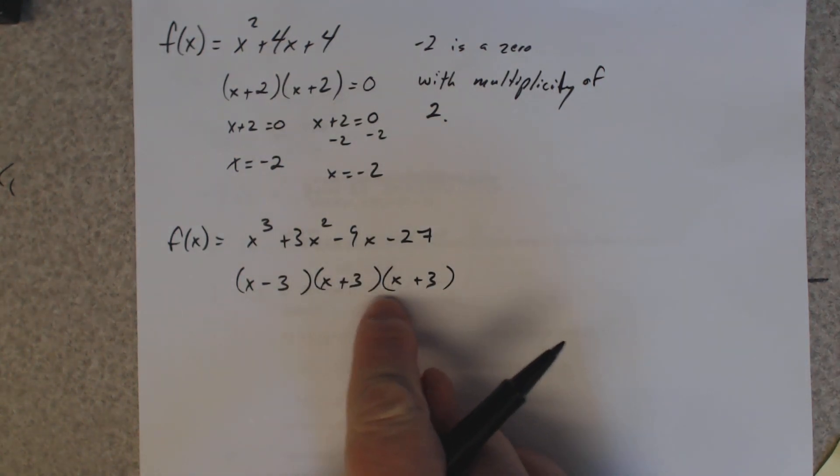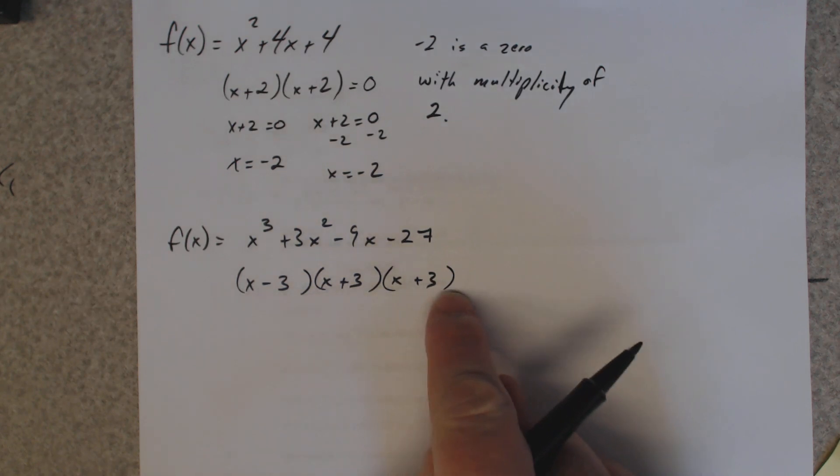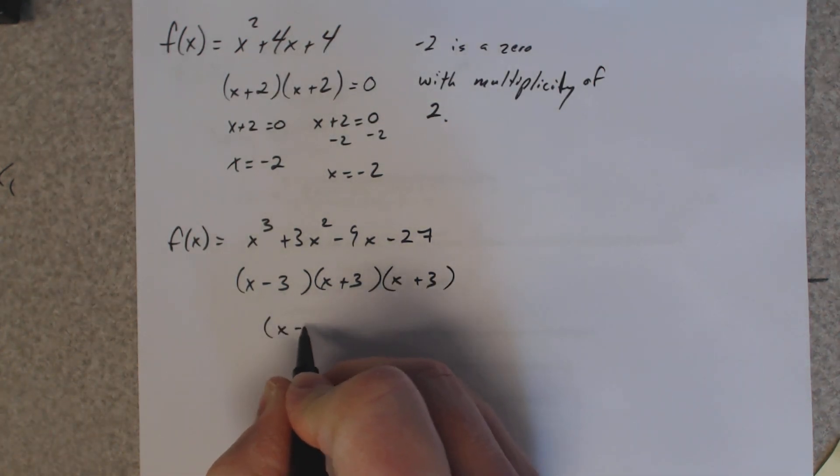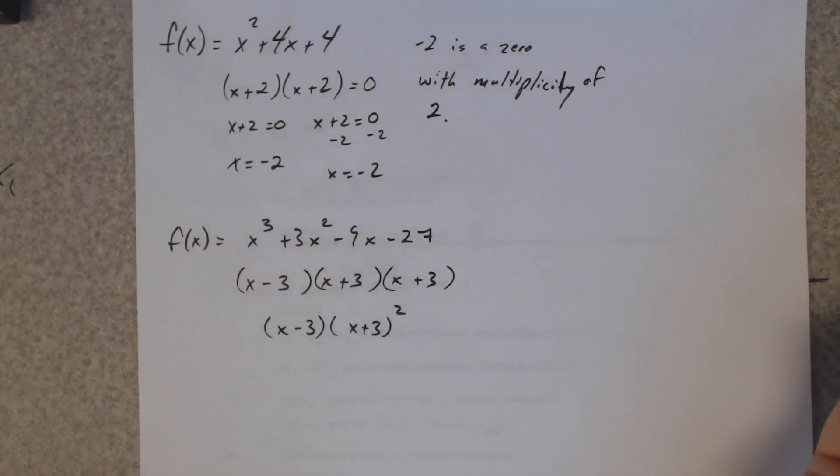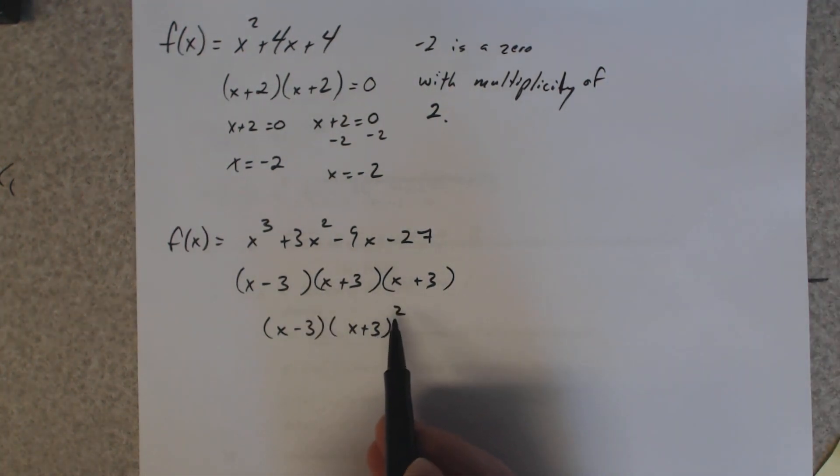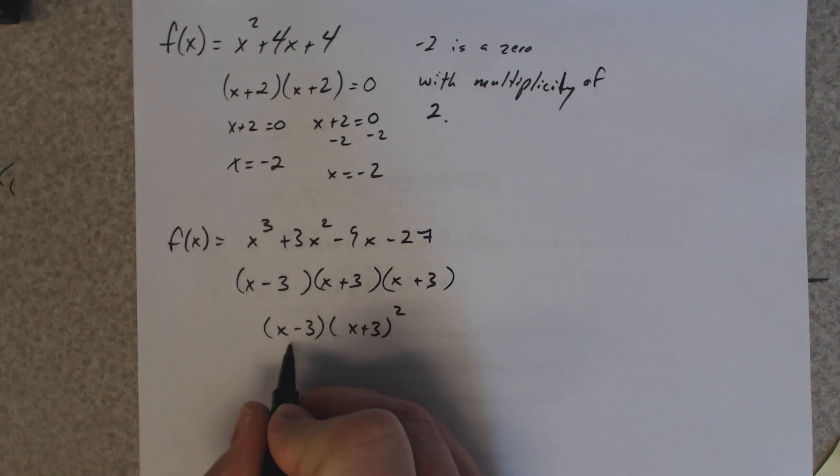Well, you see how you have two of these guys occurring twice? You don't have to write all three factors out. You could write it a little bit easier as x plus 3 squared. See how there's two of them repeating? So that means we just write it as a squared.